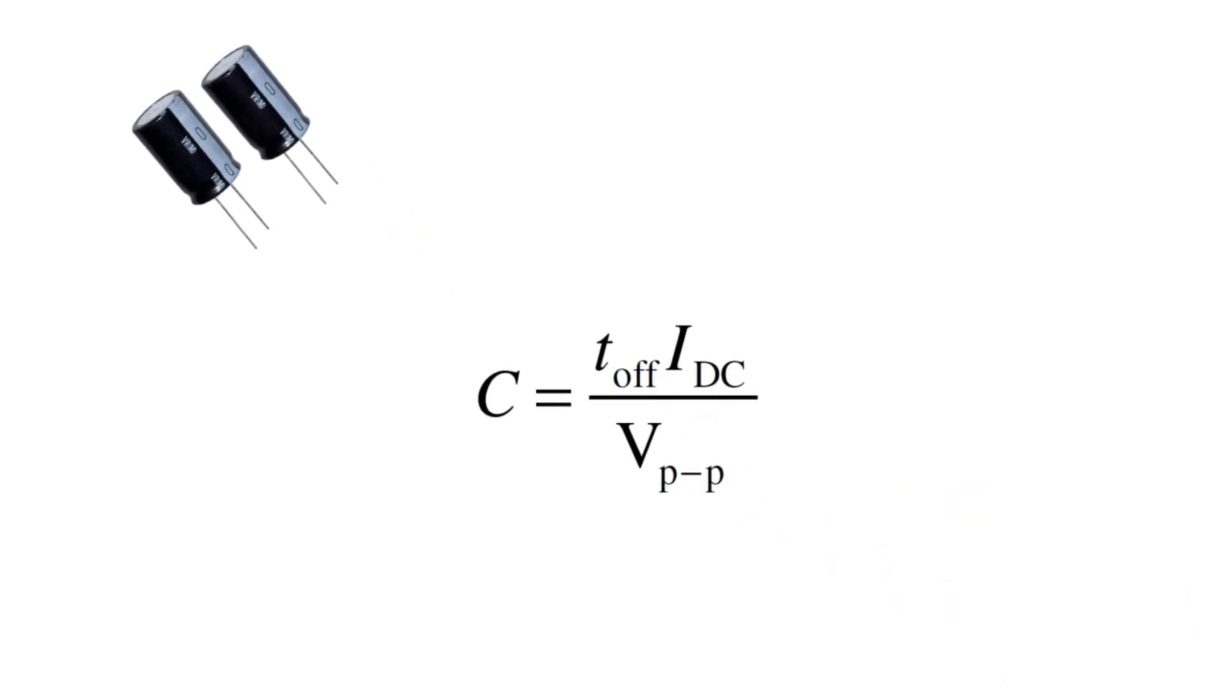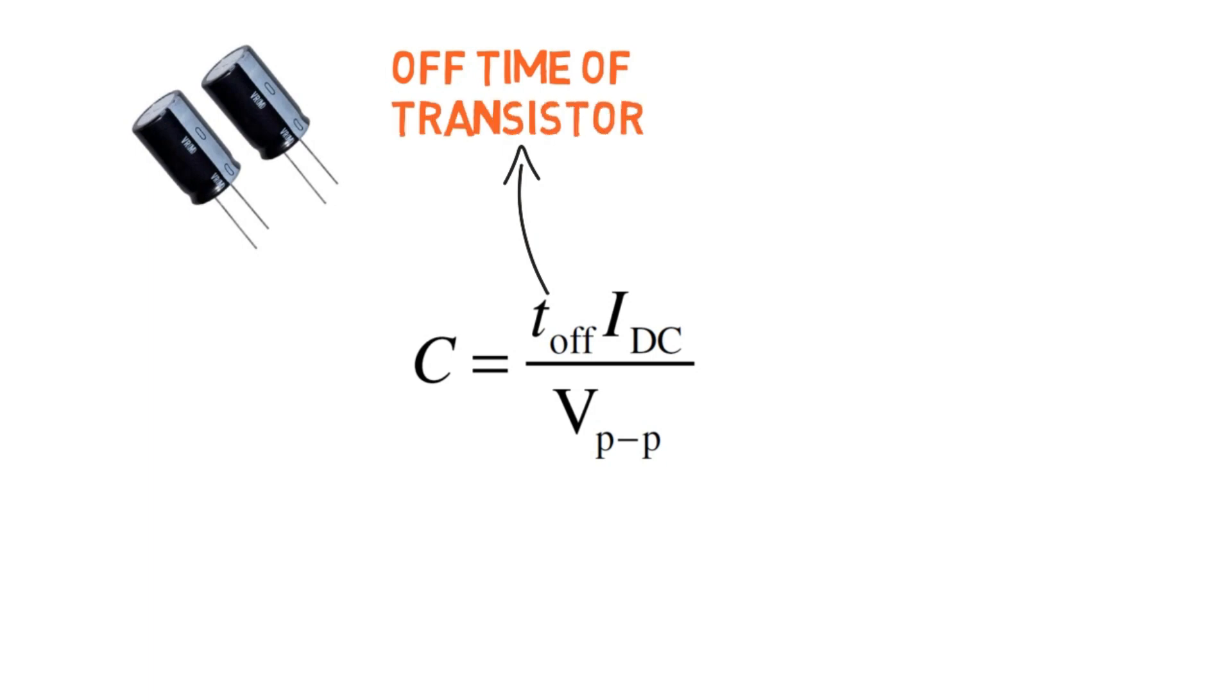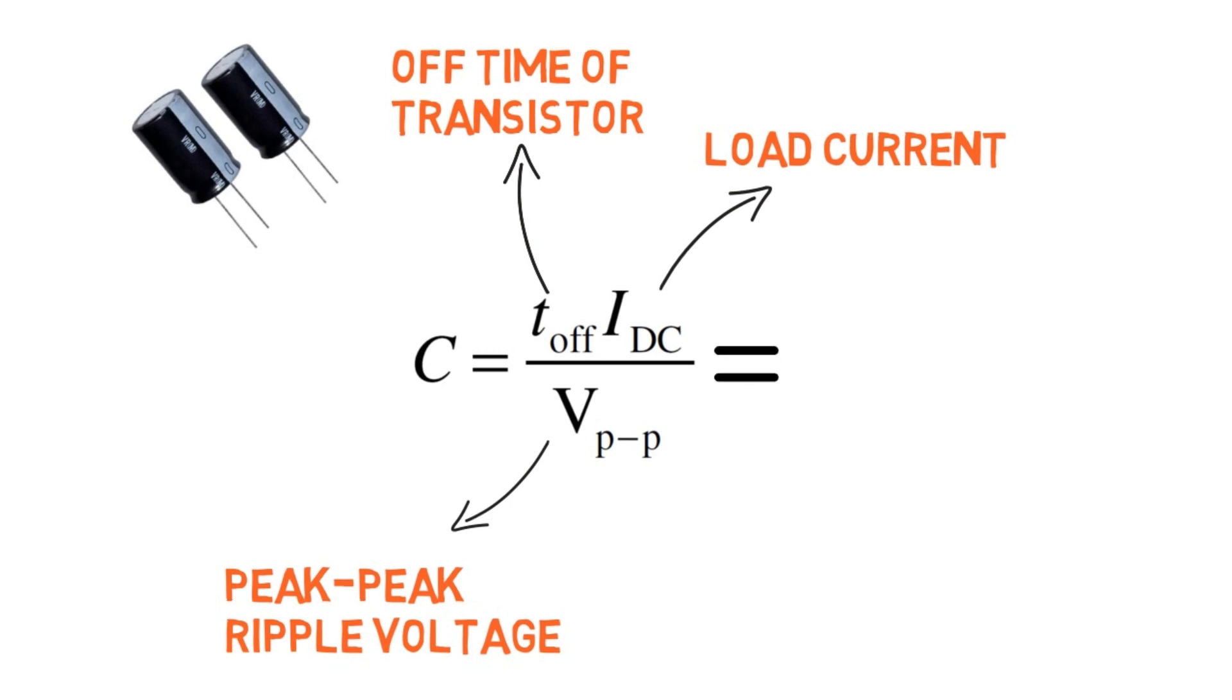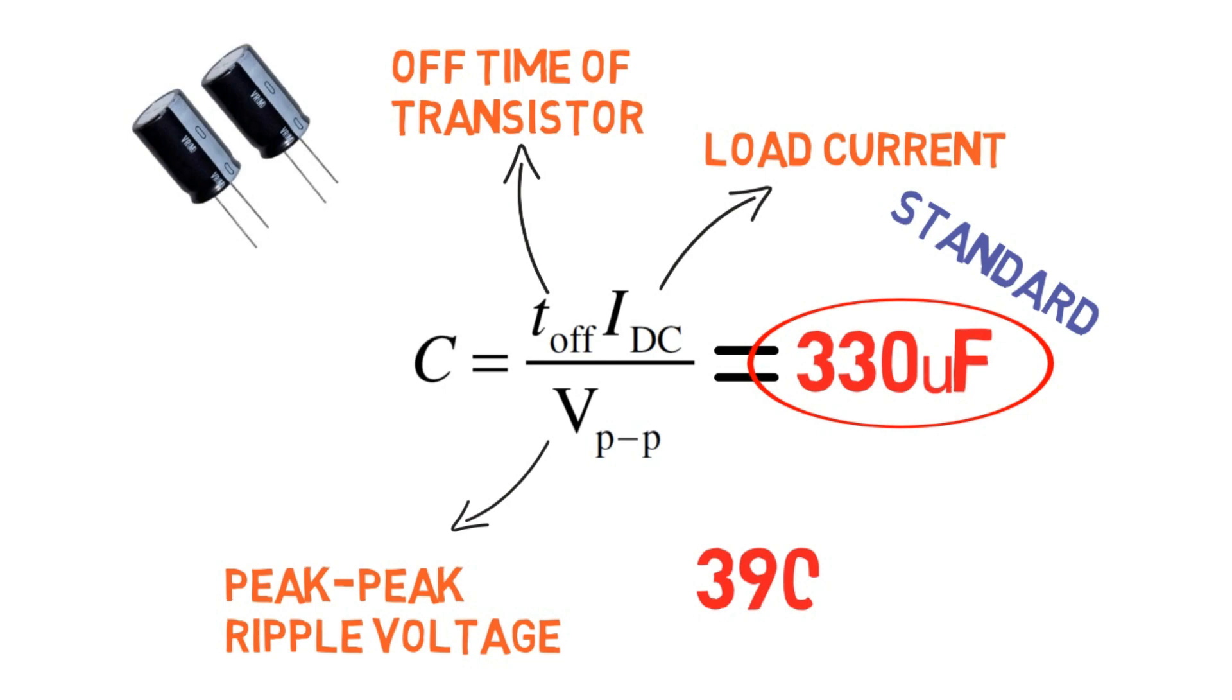Now we will calculate the output capacitor such that it will meet the maximum output ripple voltage specification. The formula for selection of capacitor is shown where t_off is the off time of transistor, I_DC is load current, and V_pp is peak to peak ripple voltage. Hence the output capacitor value is 333 microfarad. Select the standard available capacitor value and it should be greater than this, that is 390 microfarad, 200 volt.